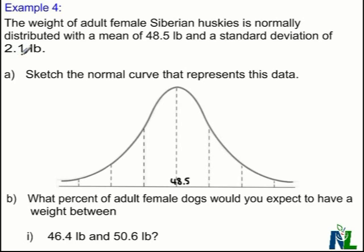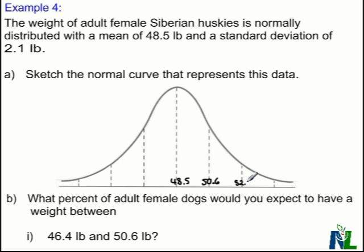Going out by 2.1, I need to add 2.1 each time I move out one standard deviation on my diagram. So if I add 2.1 to 48.5, I'll get 50.6. Adding 2.1 to 50.6 gives me 52.7. Going one step further, I'll get 54.8.